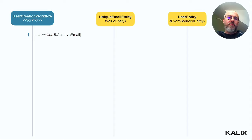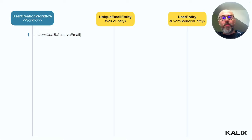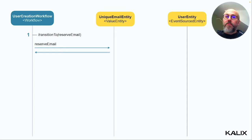Visually it looks like this: we have the workflow as the central point. I won't have an application controller anymore — I'll just hit the workflow directly from the outside, and then I have my two entities. When I initiate the workflow, the first transition moves to the reserve email step. Kalix executes the first step, which calls the reserve email method on the unique email entity — creating the entity if it doesn't exist yet and reserving the email, or failing if it's already in use.